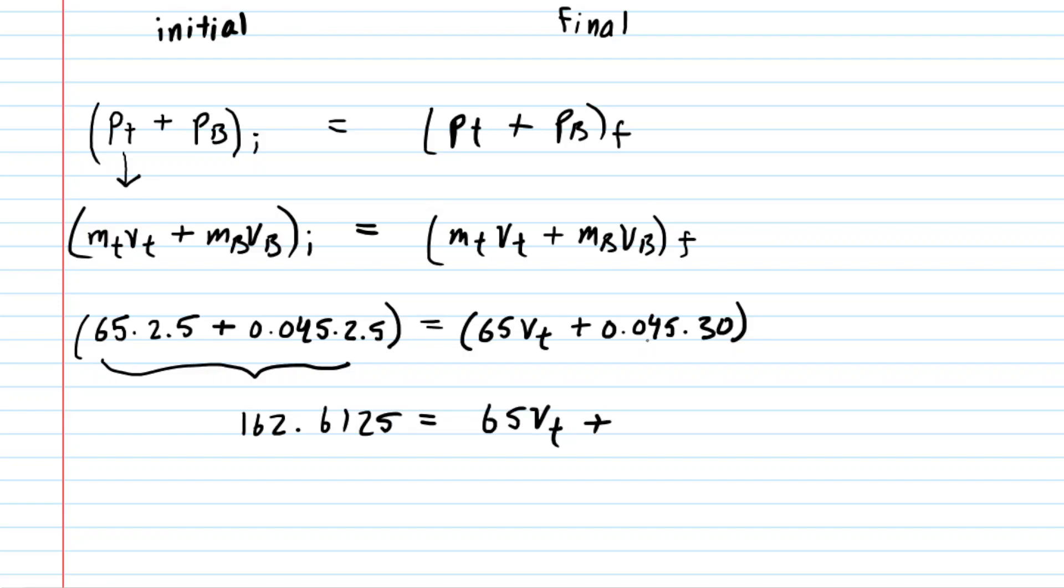Let's multiply the 0.045 times 30 and we get 1.35. Now we can subtract both sides by 1.35 next.